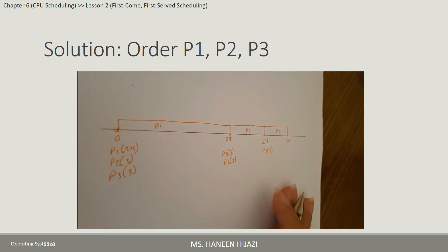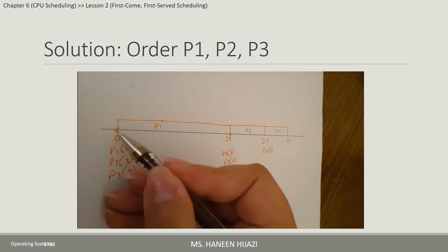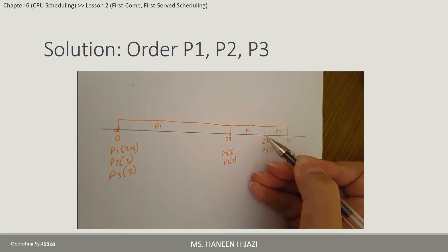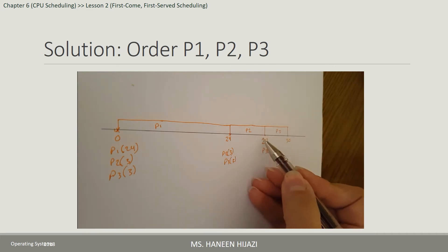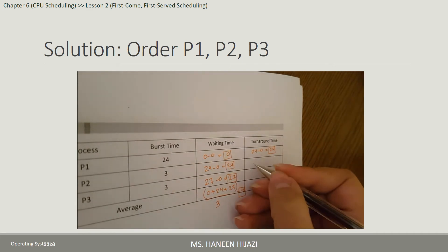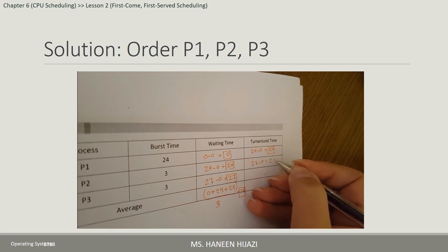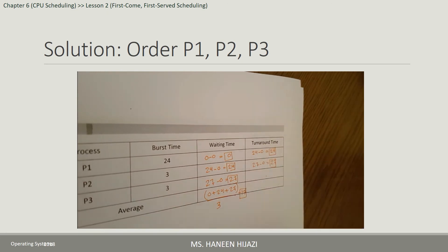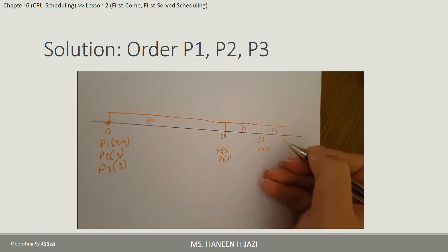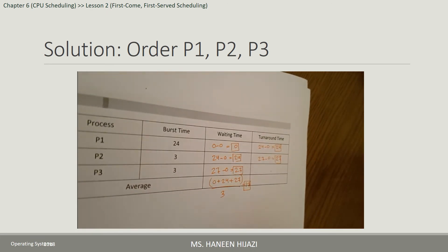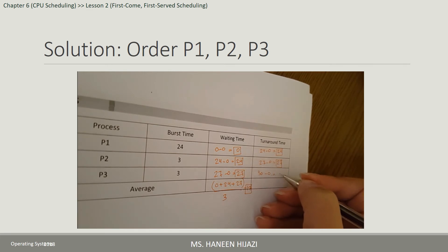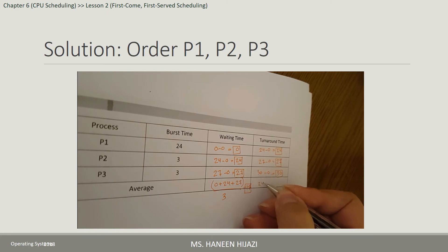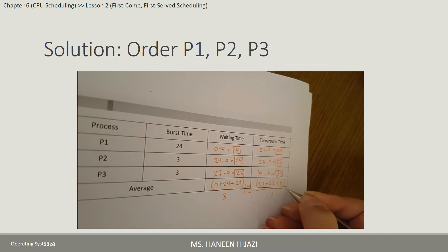P2 أمتة فاتت؟ at time 0. أمتة خلصت P2؟ at time 27. فبدو يكون 27 - 0 = 27 — هذا الـ turn around time تبع P2. P3 أمتة فاتت على السيستم؟ at time 0. أمتة خلصت؟ 30. يعني 30 - 0 = 30. الـ Average Turn Around Time رح يكون مجموعهم: (24 + 27 + 30) / 3 = 27.